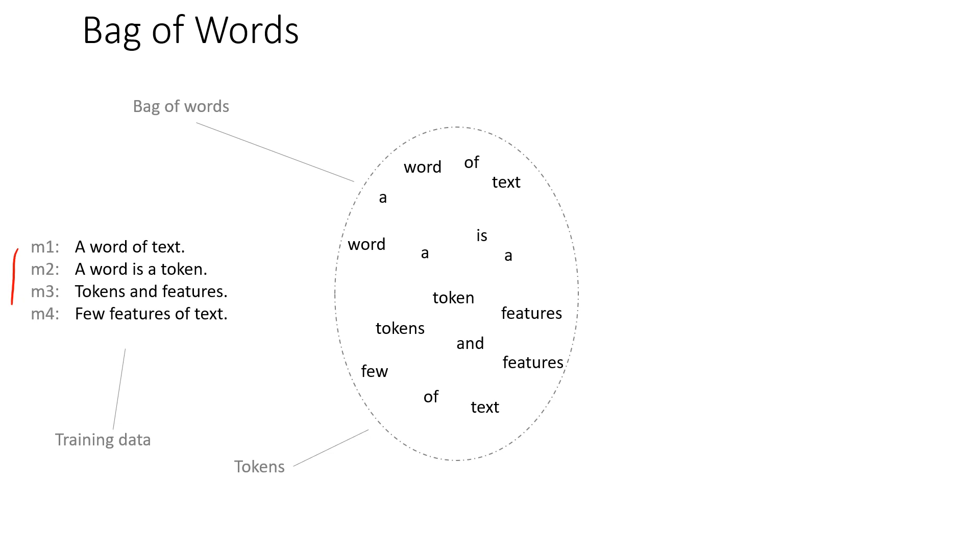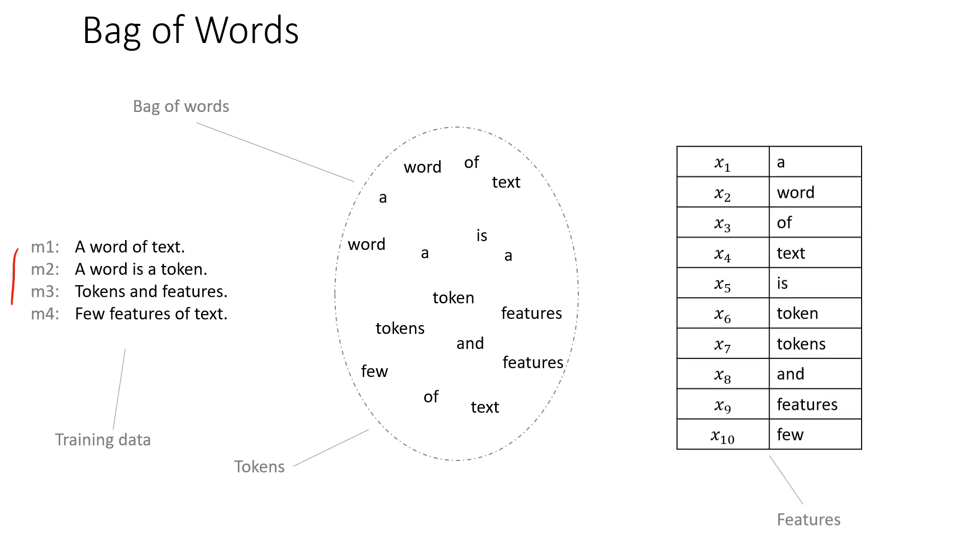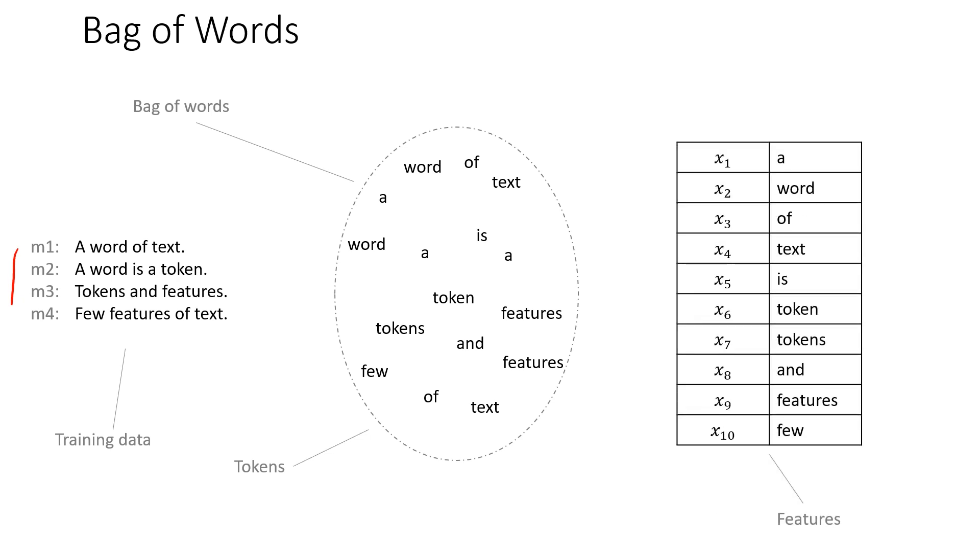So then what you would do is take each word in the bag of words and turn that into one potential feature. So x1 will be one if a message has the word 'a' in it and zero if the message does not have the word 'a' in it. x2 will be a one if the message has the word 'word' in it and a zero if the message does not have the word in it.